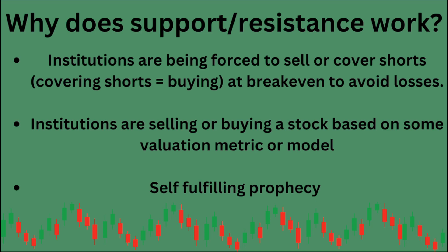Second, institutions are buying or selling a stock based on a valuation metric or model. Let's say you have a stock plugged into a DCF and the risk-to-reward profile looks attractive when the stock is at, say, $400. You could see a support level in the chart, but it's really just a large institution buying the stock at 10 times P/E — a valuation they're comfortable with.